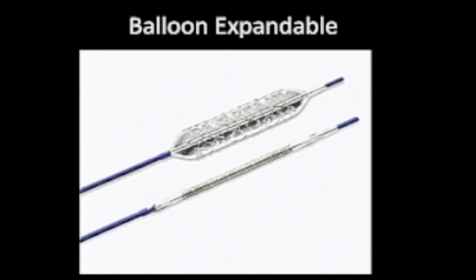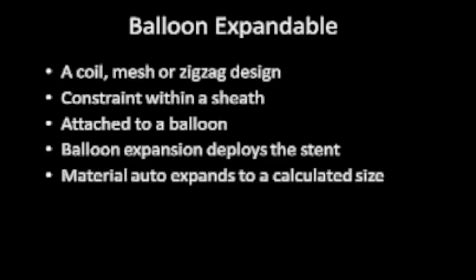A balloon-expandable stent is mounted on the outside of a balloon on a guide wire system. As you pull back the sheath, you inflate a balloon to a certain atmosphere of pressure and it deploys the stent. It's a coiled mesh or zigzag design attached to the balloon, and it expands to a calculated size once you inflate the balloon. These come from the factory with specifications for how much atmosphere is needed to inflate it to a certain diameter.